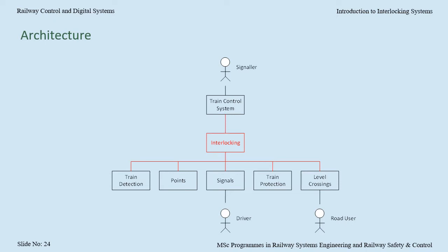But how to ensure that, if the signaller tries to send a movement authority to the driver or to move a set of points, that it is safe to do so? This is where the interlocking comes in. The interlocking takes inputs from all of the other subsystems — requests from the signaller, where the trains are from the train detection, what lie the points are in, and so on. It considers whether any requests are safe, and if so, sends outputs such as moving points to the opposite lie, starting level crossing operation, making signals change state, and so on.